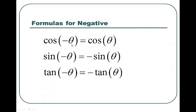So cosine of negative theta is cosine theta — that negative disappears. With sine and tangent, the negative comes out front. The absolute value of the answer is always the same; it's just that you have a negative out front. It could be that the value is actually positive because the sine of the angle might be negative and two negatives make it positive. With cosine, the negative disappears — it's the only magic we have in the course.